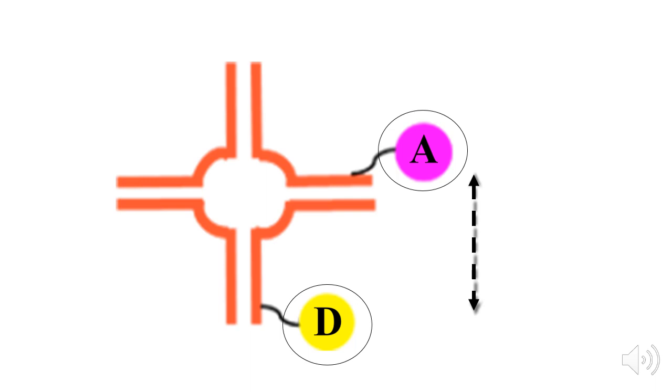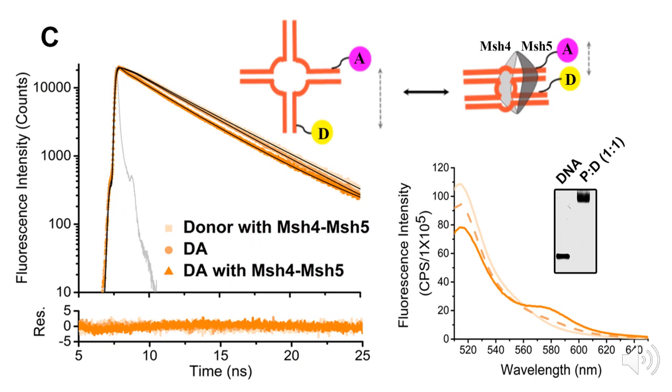The efficiency of energy transfer from the donor to the acceptor dye corresponds to the distance between the junction arms. The transfer efficiency is determined from either the fluorescence lifetime or the intensity of the donor dye.